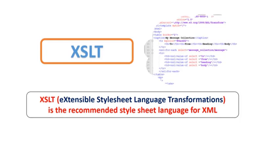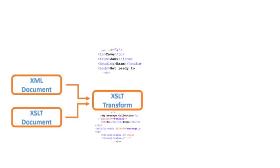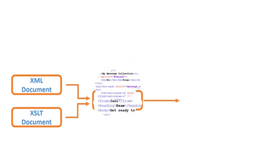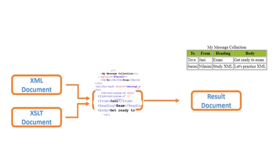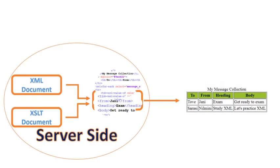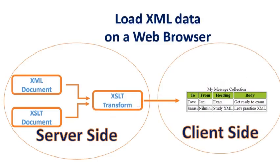An XSLT stylesheet is used to define the transformation rules to be applied on the target XML document. The XSLT processor takes the XSLT stylesheet and applies the transformation rules on the target XML document, and then it generates a formatted document in the form of XML, HTML, or text format. XML and XSLT files are running on the server.